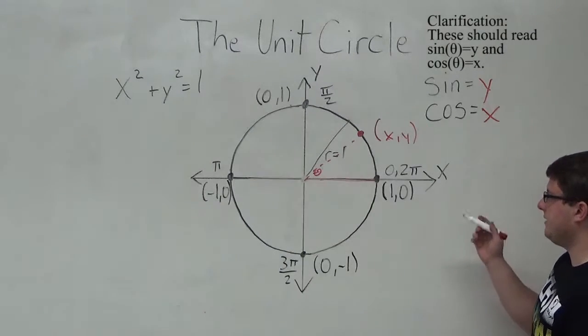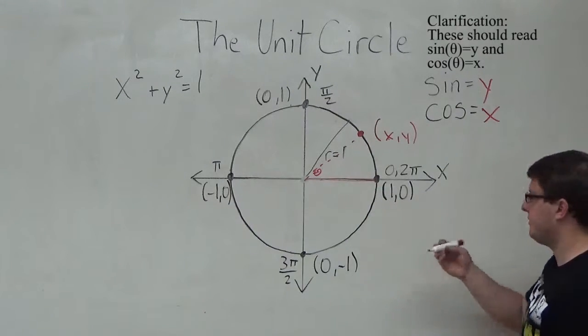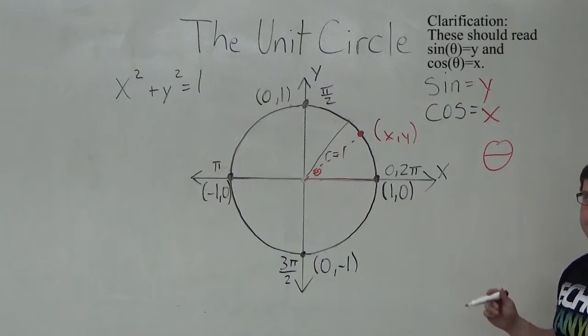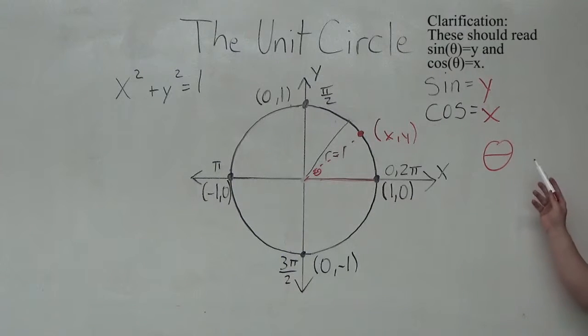The next thing I'm going to explain is what this variable theta actually is. It's used a lot in trigonometry to refer to this triangle or the circle. Theta is a variable for any given angle, like sine of theta or cosine of theta. It's used to refer to an angle.